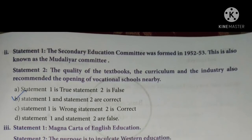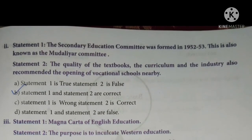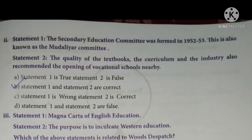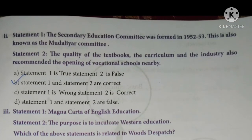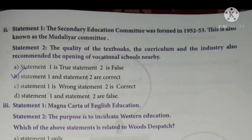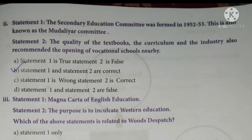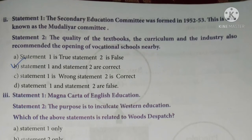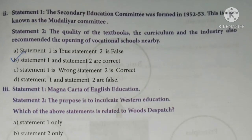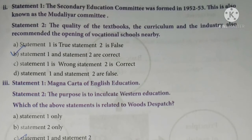Next: Statement one — the Secondary Education Committee was formed in 1952-53, also known as the Mudaliar Committee. Statement two — the quality of textbooks, the curriculum and the industry were reviewed, and it also recommended the opening of vocational schools nearby. The answer is B — both statement one and statement two are correct.